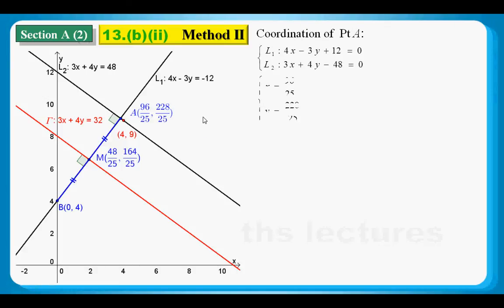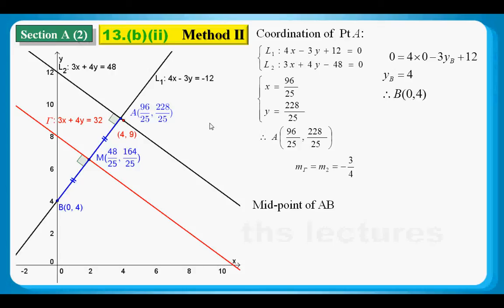First of all, I have to find A. And then, for the midpoint of AB, which is M, I got a point, I got a slope. So, I can find out the equation of gamma very easily.